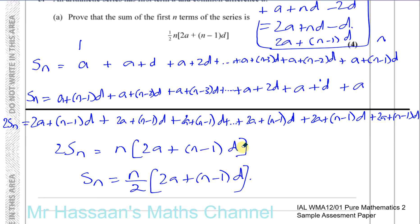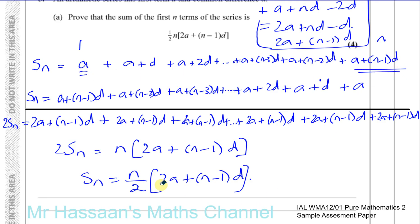There we have our formula, which is exactly what was given: half N times 2A plus N minus 1 times D. And there we've proved it. I've taken a bit longer than I should have, just so you could get some background on how to think about it using numbers — it makes it much easier to understand rather than working only with letters.